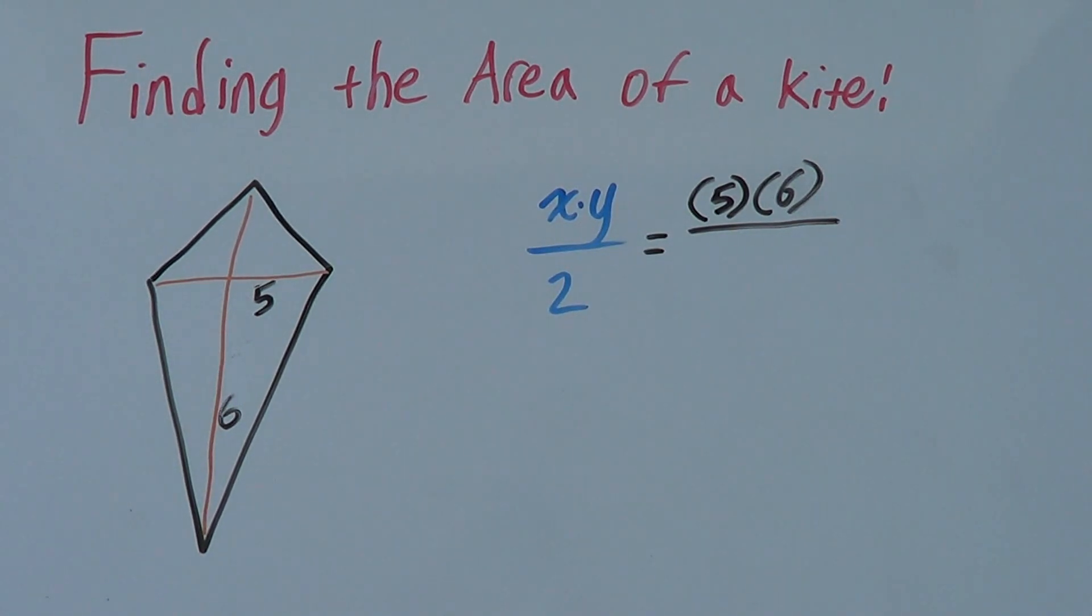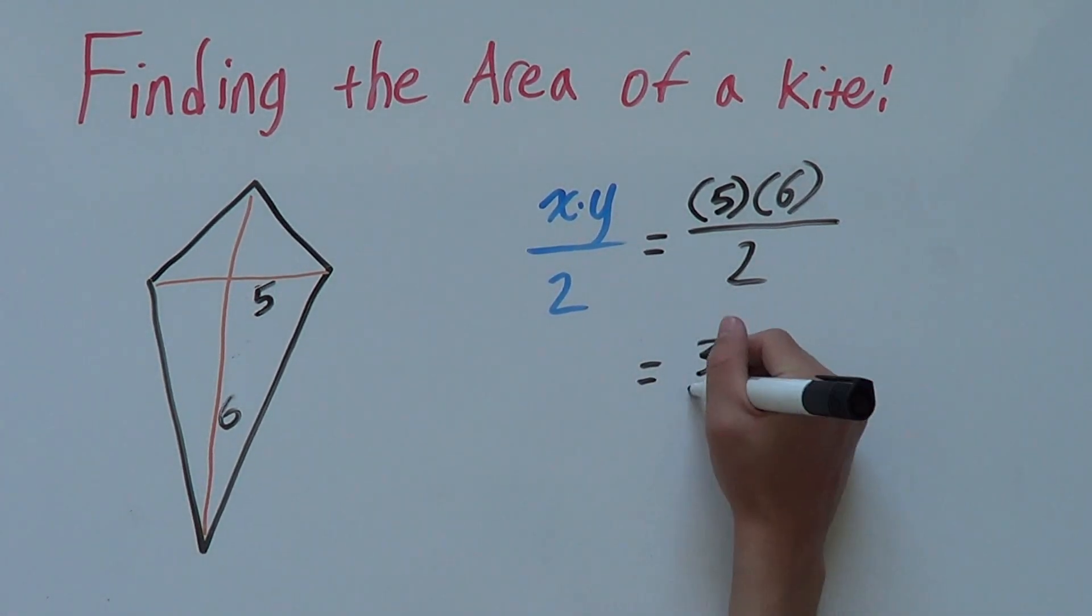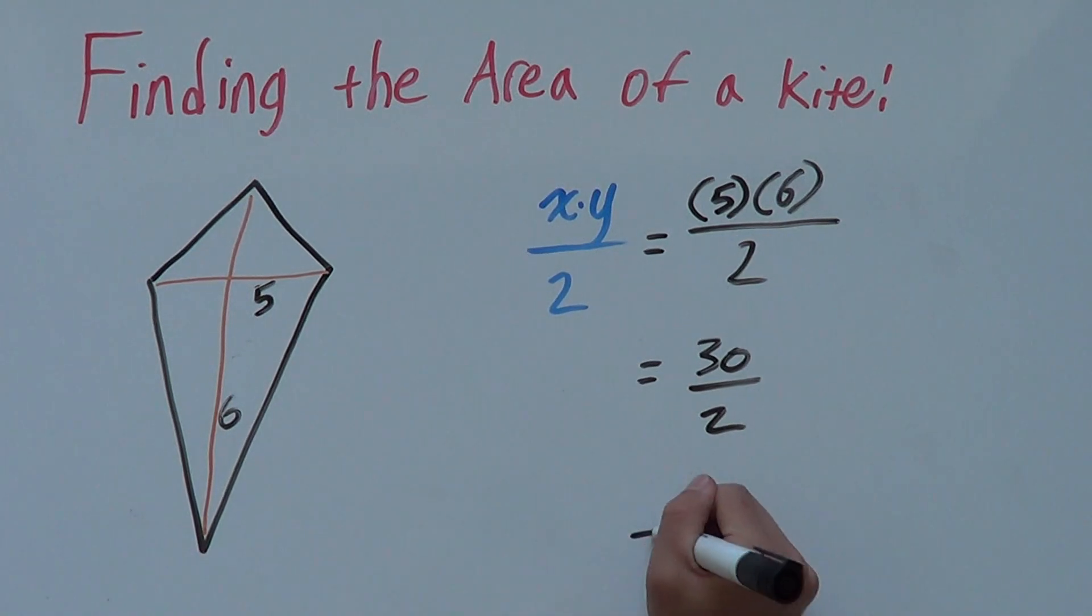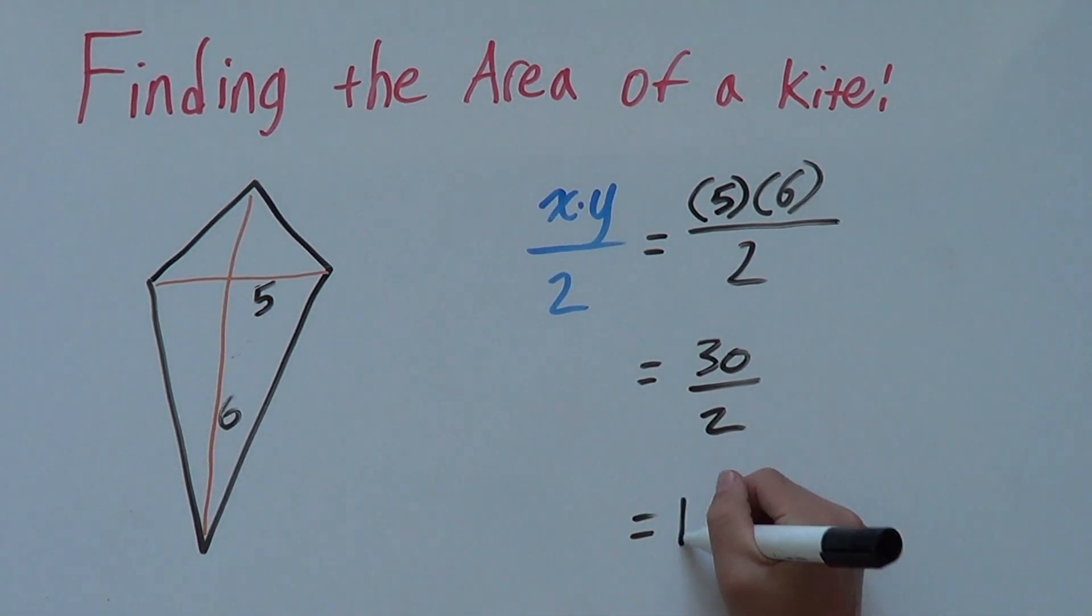And then, we have this over 2. So, 6 times 5 is 30. So, we have 30 divided by 2. And 30 divided by 2 is 15.